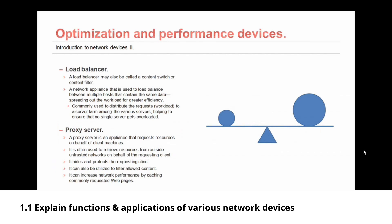Now let's talk about optimization and performance devices. We begin with the load balancer, which may also be called a content switch or content filter. It is a network appliance used to load balance between multiple hosts that contain the same data, spreading out the workload for greater efficiency. Load balancers are commonly used to distribute requests or workload to a server farm among its various servers, helping to ensure that no single server is overloaded with work requests.